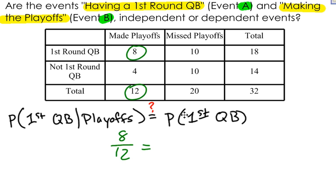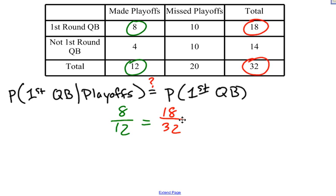Now let's look at the other side: what is the probability that you have a first-round quarterback? There are a total of 18 first-round quarterbacks in the league that are starters, and there are 32 teams altogether. So the probability of having a first-round quarterback is 18 out of 32. It's hard to compare these fractions directly, so let's convert to decimals: 8 out of 12 is approximately 0.667, and 18 out of 32 is 0.5625.